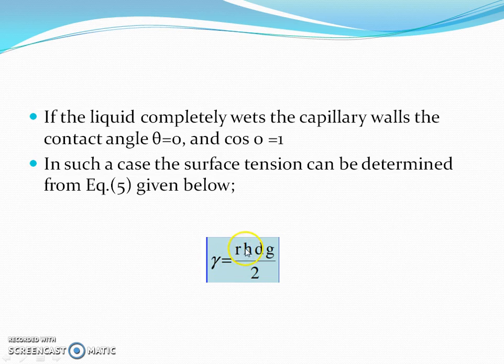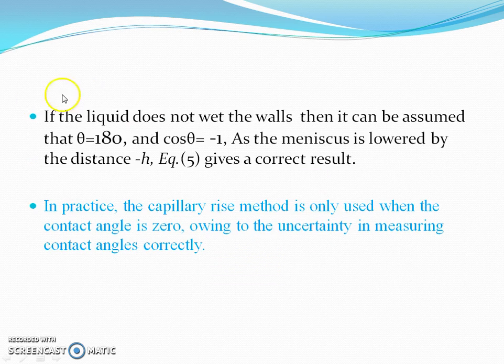If the liquid does not wet the walls, then it can be assumed that θ equals 180 degrees and cos180 equals minus 1. As the meniscus is lowered by the distance h, equation 5 gives the correct result.